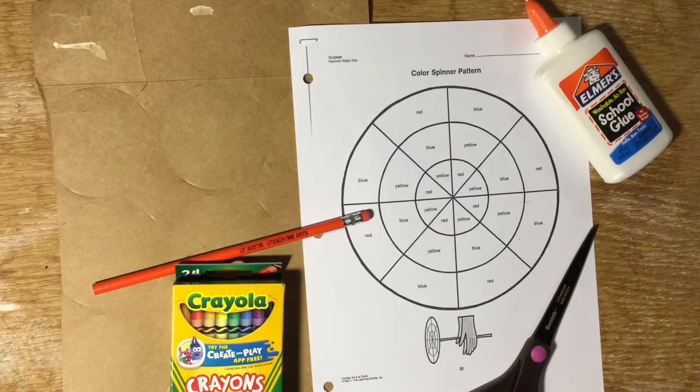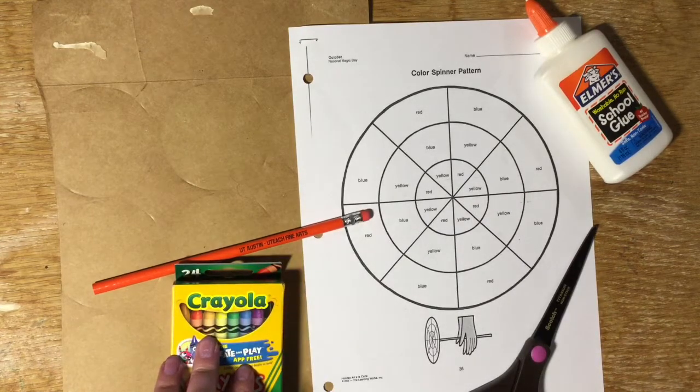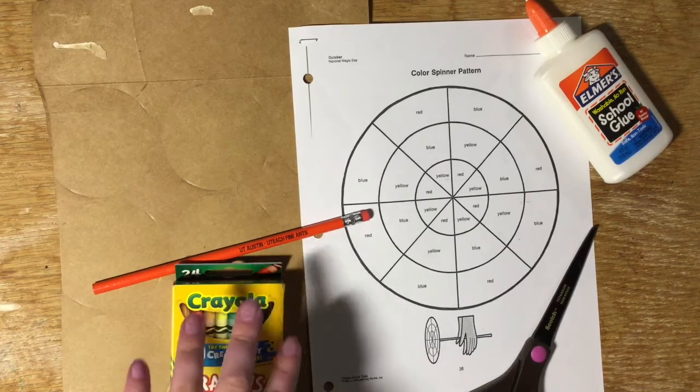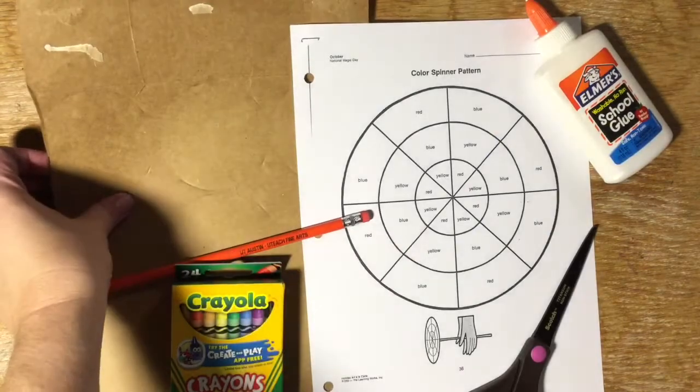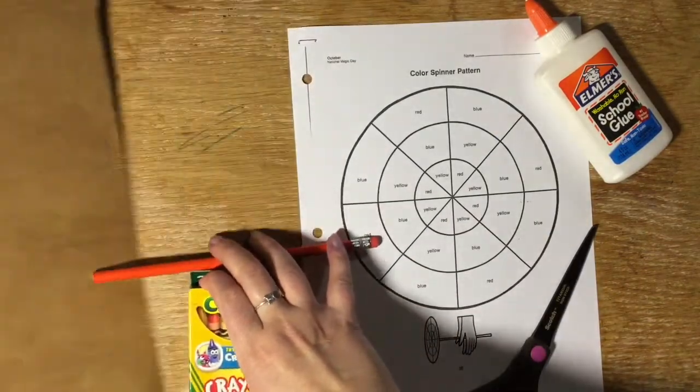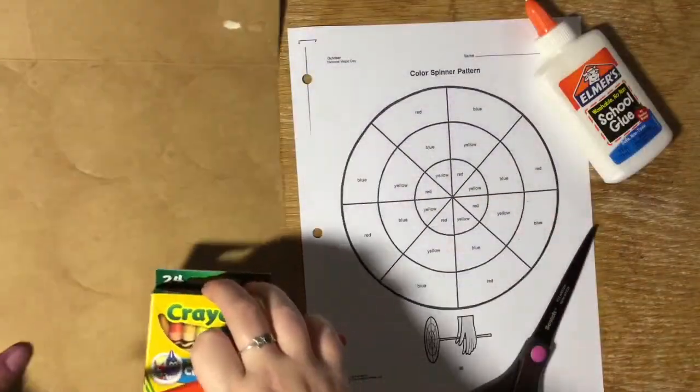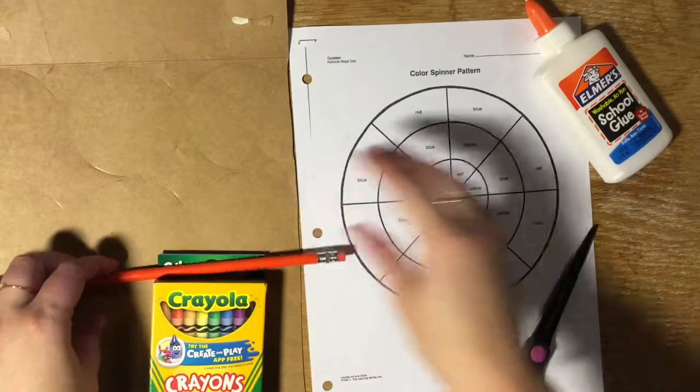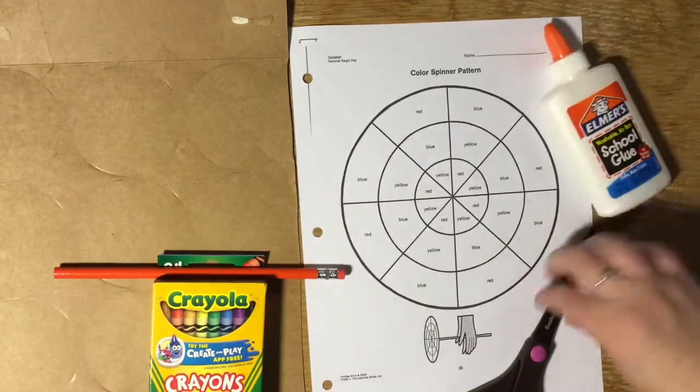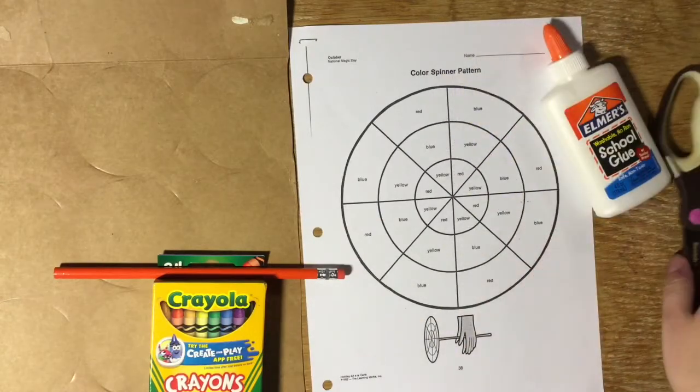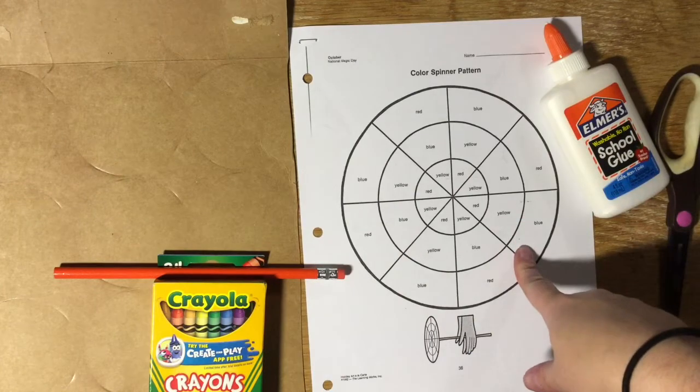These are all the supplies you're gonna need to make your color spinner. You're gonna need some crayons or markers or colored pencils or oil pastels. Really anything will do. I'm gonna use crayons. You're gonna need some really thin cardboard like the type that you find on a cereal box. I'm using cardboard from a box of canned corn. You're going to need some glue. Glue stick will absolutely work. This is just all I had on hand. You're gonna need a pair of scissors and you're going to need the color spinner printout from your essential learning at home kit.